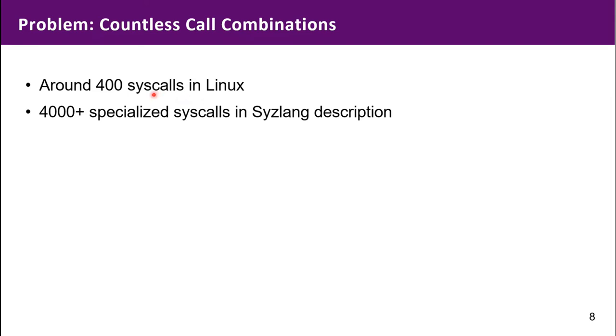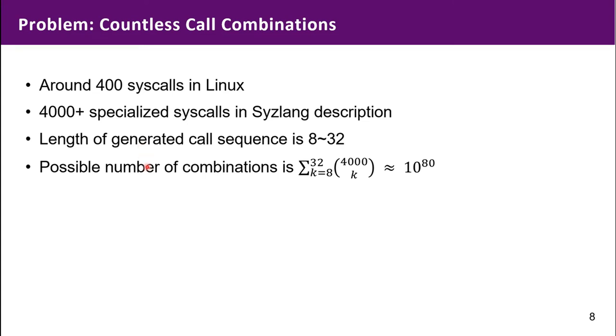The kernel contains about 400 syscalls and Syslang defines more than 4,000 specialized syscalls. Typically, each call sequence contains 8 to 32 syscalls, which means the possible number of all combinations is very huge. It would take many years for the fuzzer to execute all combinations.